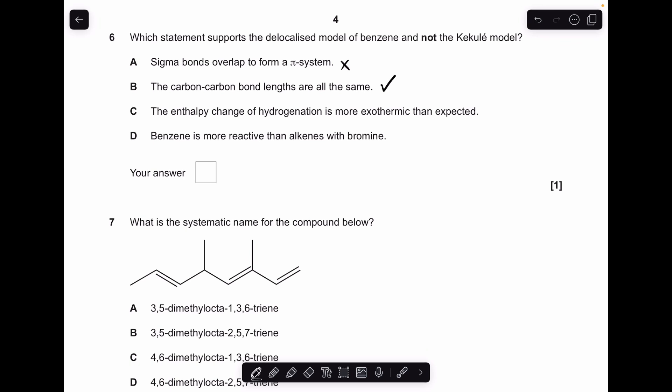We'll just do the other ones. C, enthalpy change of hydrogenation is more exothermic than expected? No, it's less exothermic. And benzene is more reactive than alkenes with bromine? No, it's less reactive. So B.